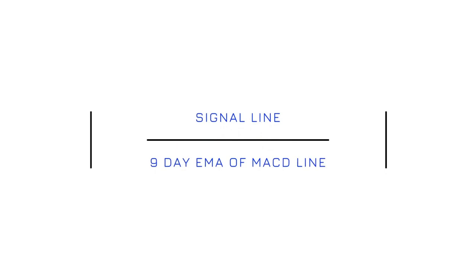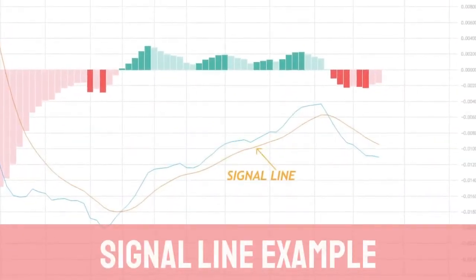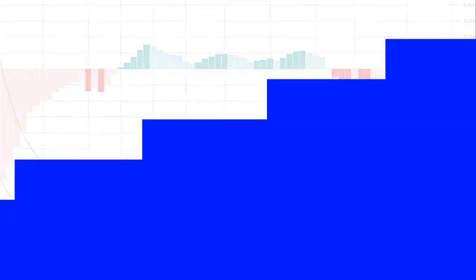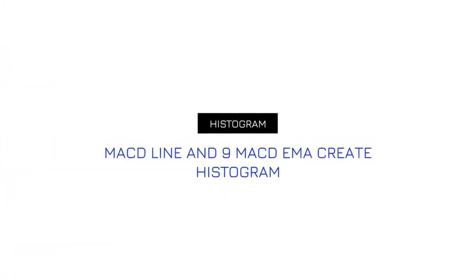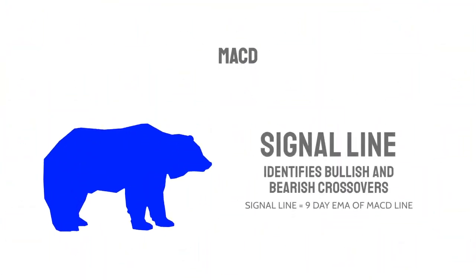The other line which is seen on the MACD indicator is the signal line. Here we see an example of the MACD signal line. The signal line is a 9-day EMA of the MACD line.